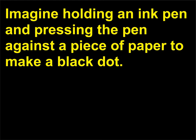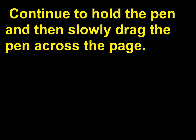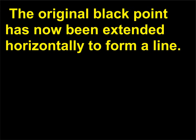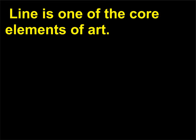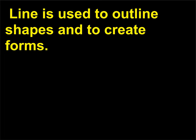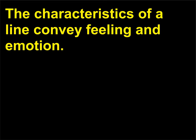What is Line? Imagine holding an ink pen and pressing it against a piece of paper to make a black dot. Continue to hold the pen and slowly drag it across the page — the original black point has now been extended horizontally to form a line. Line is one of the core elements of art, used to outline shapes and create forms. The characteristics of a line convey feeling and emotion: a shaky line is vulnerable while a bold, straight line is powerful.